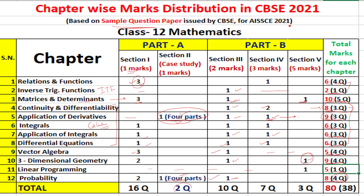These case study questions are very important. They are the easiest questions if you practice them; otherwise they may be difficult and your marks will be deducted. The total overall distribution is 80 marks weightage across 38 questions.